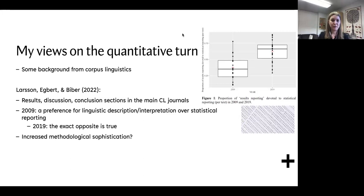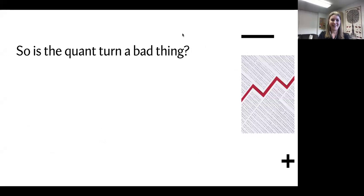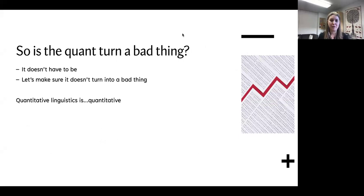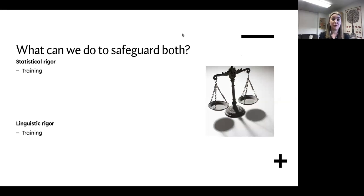Aren't we just witnessing increased methodological sophistication — isn't that a good thing? Potentially, but it seems to have come at a cost. We saw a diminished focus on linguistic description and interpretation, fewer text excerpts, fewer linguistic examples, and a move away from language examples and linguistic features. So it's potentially problematic. Am I saying the quantitative turn is a bad thing? It doesn't have to be. Let's make sure it doesn't turn into a bad thing. We need statistical rigor for research questions that require it, and we always need linguistic rigor.